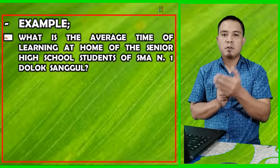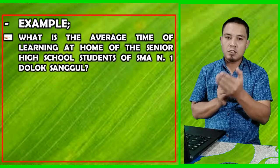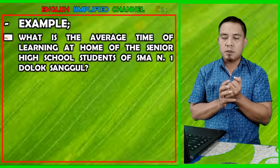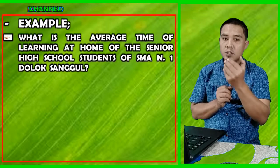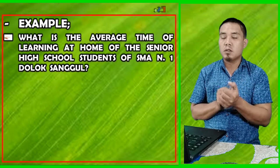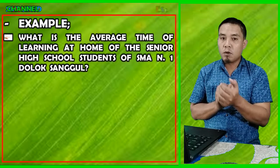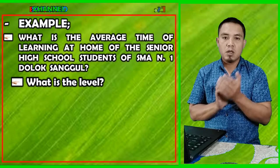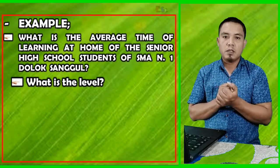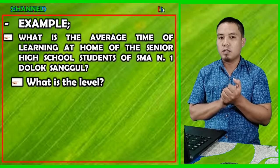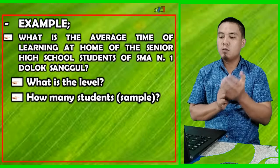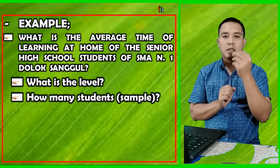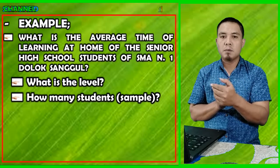This is an example of a research question. Suppose this is your research question — are you going to collect the data or information from all of the students in terms of levels? Senior high school is divided into three levels: first grade, second grade, and third grade. The second question is how many students — all of them or not?